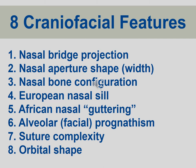Here are the craniofacial traits that we identify, observe, record, and evaluate to determine if we can narrow it down to one of these three or four ancestral groups. These include nasal bridge projection, nasal aperture width and shape, the nasal bone configuration, whether there is sealing or guttering at the inferior aspect of the nasal aperture, whether there is prognathism or jutting out of the alveolus or face, whether there is sutural complexity, and orbital shape — which has also been shown to be quite effective in making this determination.